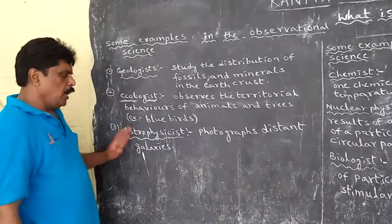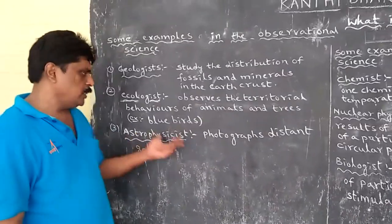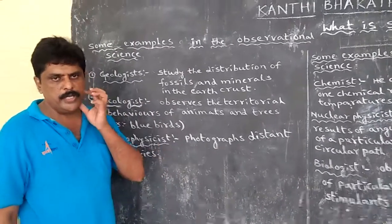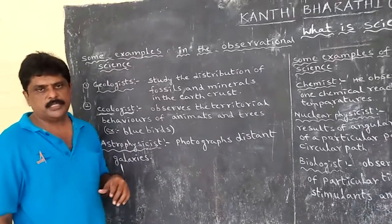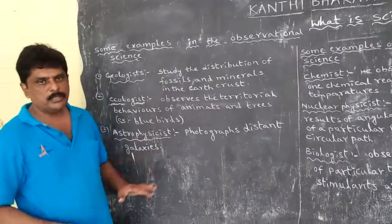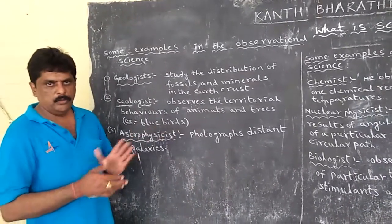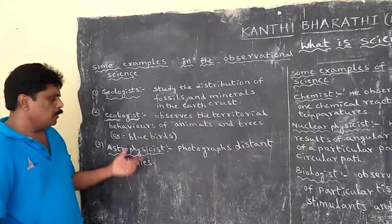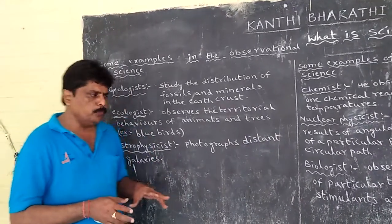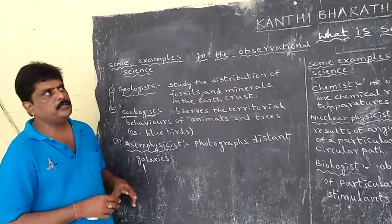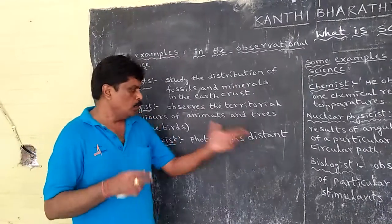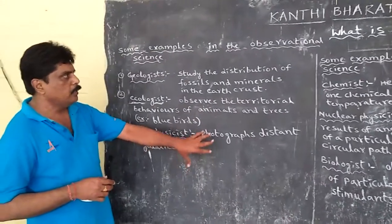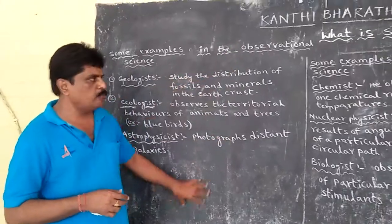Next one is astrophysicists. What is an astrophysicist? It means taking photographs of distant galaxies. You already know that a large number of stars is called a galaxy, and our sun is also in a galaxy. The scientists who photograph distant galaxies — this is also observational science. So these are the examples for observational science.